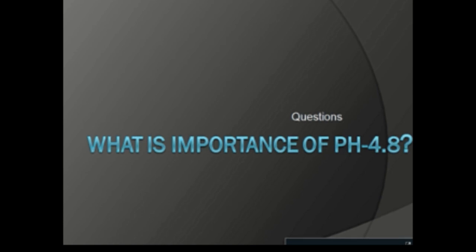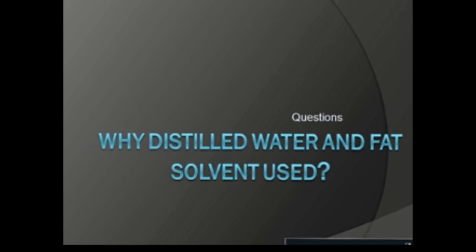What is the importance of pH 4.6? This pH — approximately 4.6 to 4.8 — is the isoelectric point for casein, at which the protein becomes least soluble in solution. Why are distilled water and fat solvents used? Distilled water is used to dissolve water-soluble components of milk like carbohydrates, vitamins, and minerals, while fat solvents are used to dissolve fat components like saturated, unsaturated, and monounsaturated fatty acids.